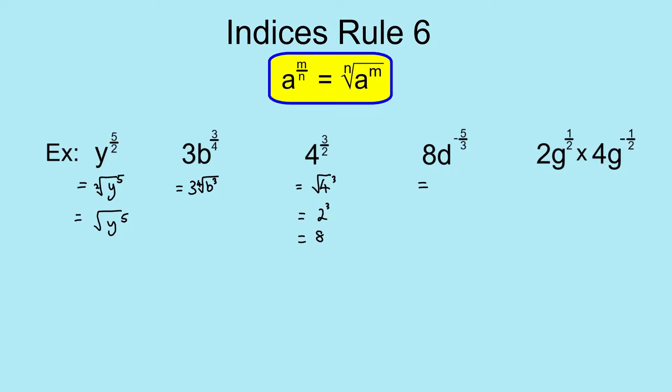So next question, same idea as the second example here, but we've got a negative power. So the first step, first thing we're going to do is deal with the negative power. So I'm going to keep the 8 on the top, bring the d to the power negative 5 thirds down to the bottom line and make that a positive 5 thirds.